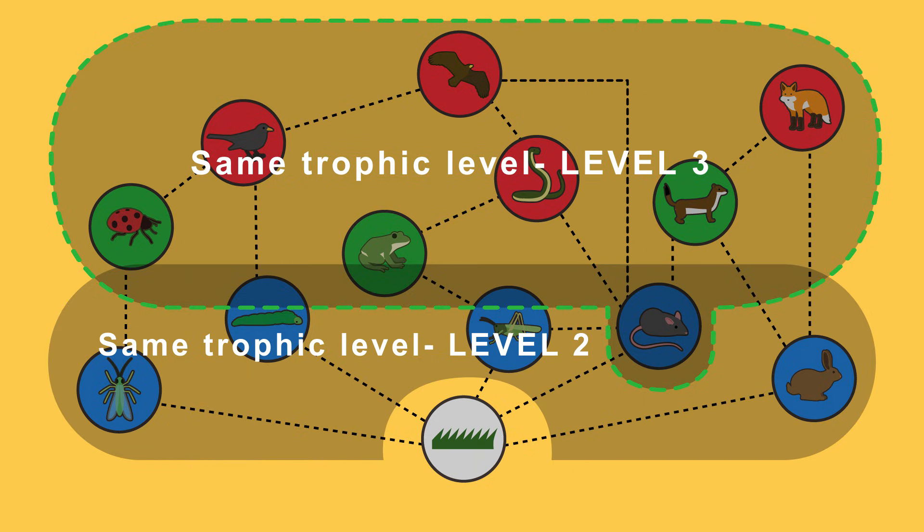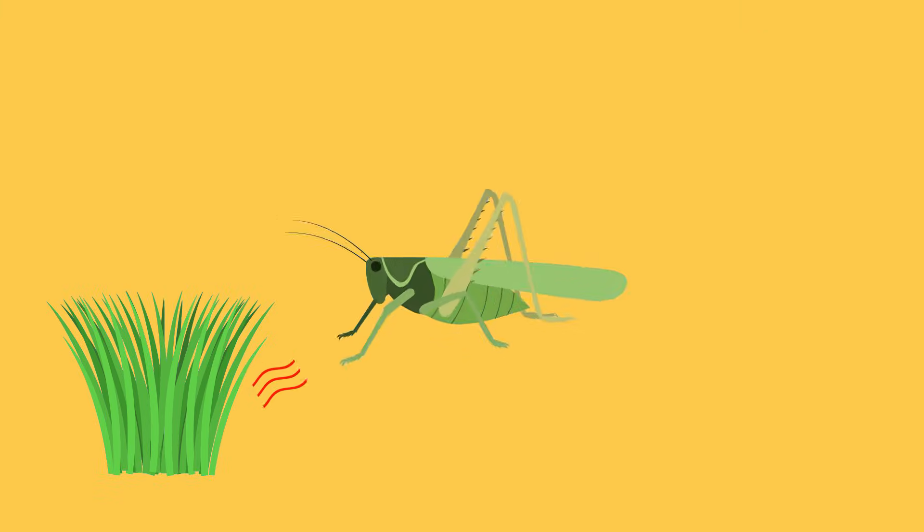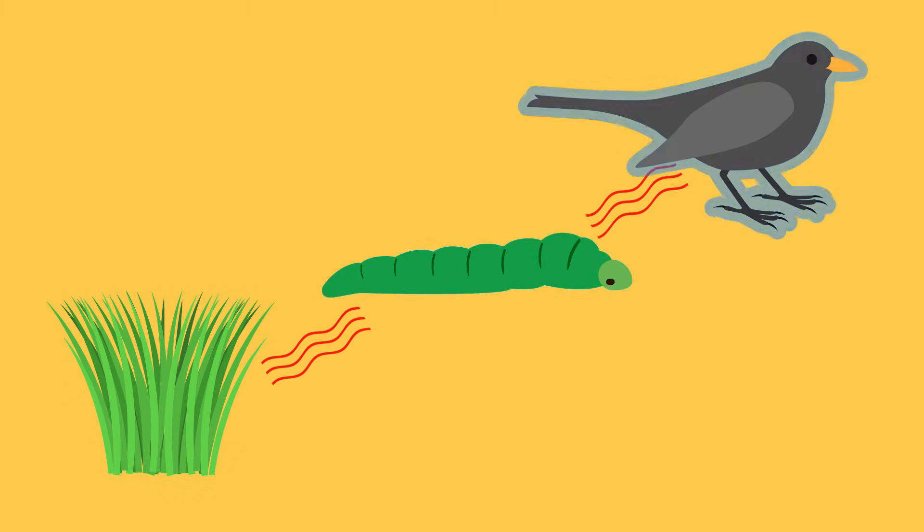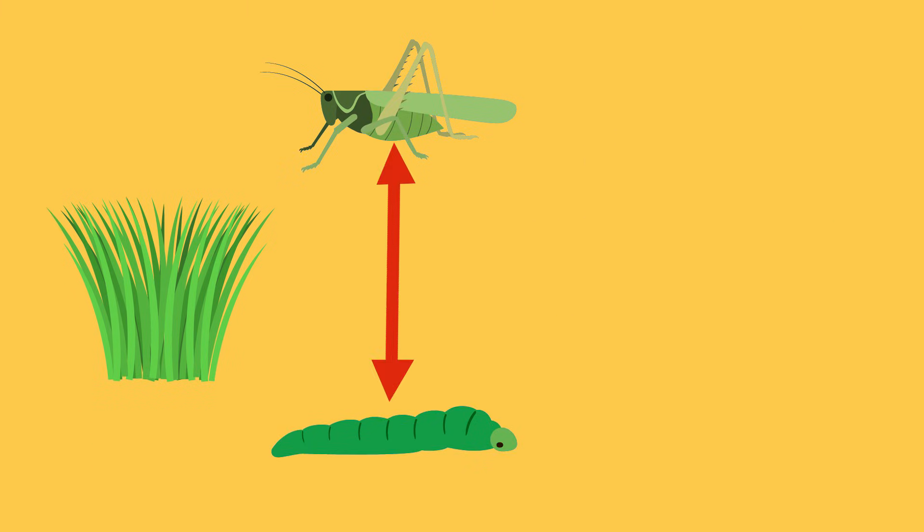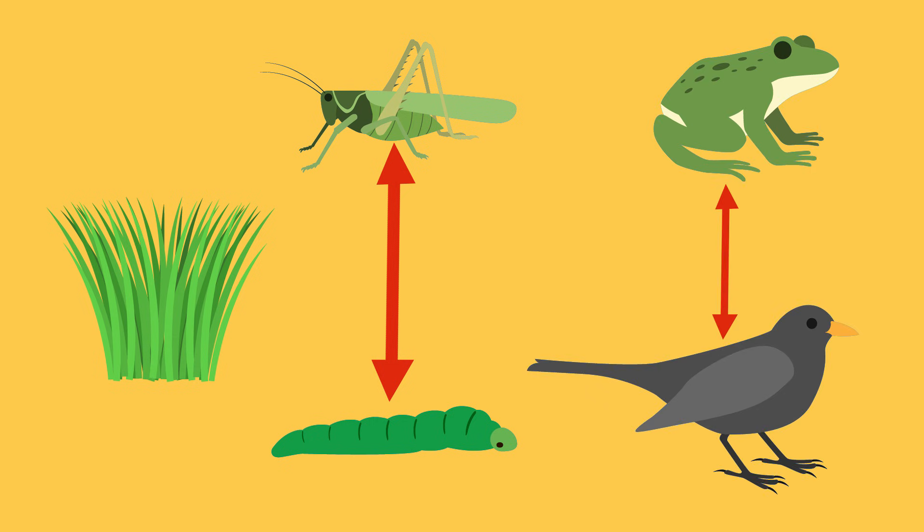So in our woodland we have energy transferred from grass to crickets to frogs and from grass to caterpillars to blackbirds. The caterpillar and the cricket are at the same trophic level just as the frog and the blackbird are also at the same trophic level. At the base of the food chain are producers.